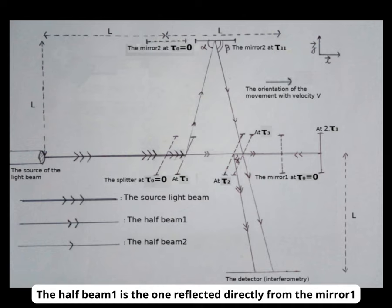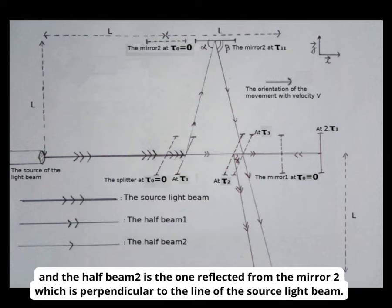The half beam 1 is the one reflected directly from the mirror 1, and the half beam 2 is the one reflected from the mirror 2 which is perpendicular to the line of the source light beam.